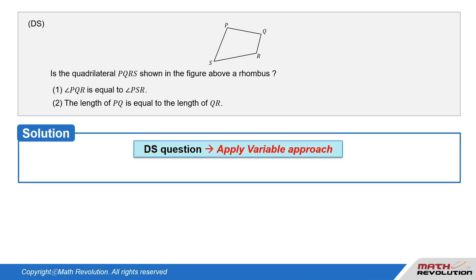Let's solve this DS question using the variable approach. A quadrilateral has five variables, so E is the most likely answer.